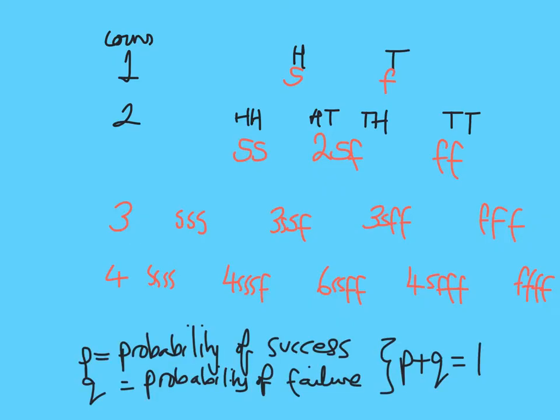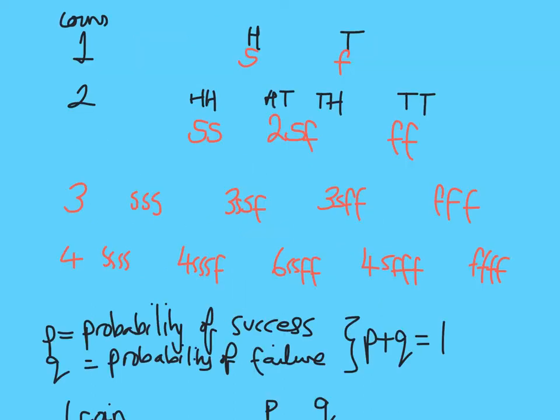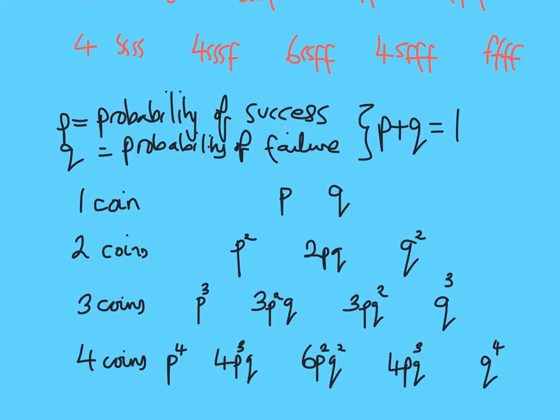Before we move on, I'm going to show you a link between binomial and Pascal's triangle. I'm going to take this triangle shape we've made and replace S with P for probability of success, and F with Q for failure. For example, SS I could write as S squared, or in this case P squared. So here is the updated version — it's very similar to the previous one, but I've replaced success with P and failure with Q and neatened it up.